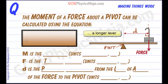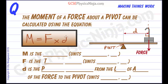So the equation which links all this together is that the moment or the turning effect is equal to the turning force that's being applied multiplied by the perpendicular distance from the line of action of the force to the pivot.